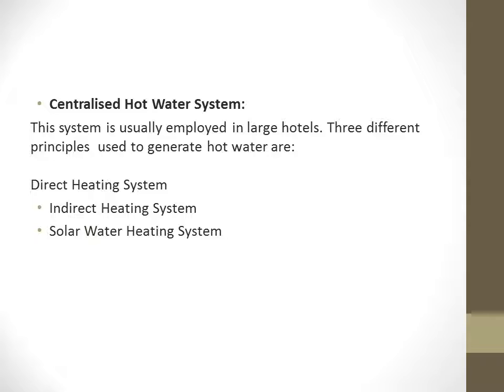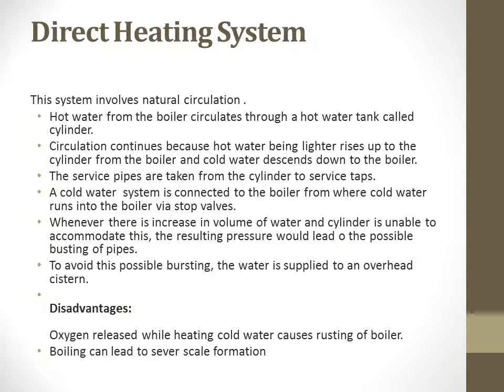First is the centralized hot water generation and distribution system, used in big hotels. It works on two different factors: direct heating system, and indirect heating and solar water heating systems. In the direct heating system, we use natural circulation — hot water from the boilers circulates through a hot water tank called a cylinder. Water goes into the cylinder, pipes are heated through the cylinder. Service pipes are taken from the cylinder to service taps. Cold water is connected to the boiler via stop valves. To avoid possible bursting if water gets too hot, overhead expansion systems are used.